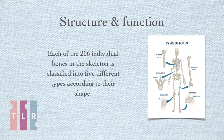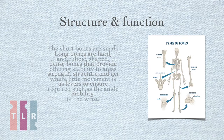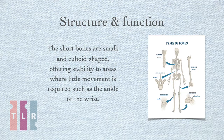Each of the 206 individual bones in the skeleton is classified into five different types according to their shape. Long bones are hard, dense bones that provide strength, structure and act as levers to ensure mobility. Short bones are small and cuboid shaped, offering stability to areas where little movement is required, such as the ankle or the wrist.